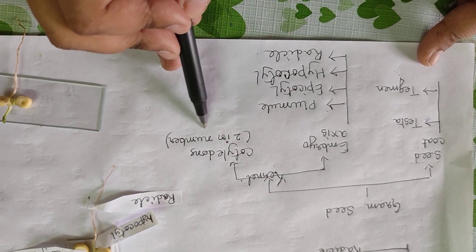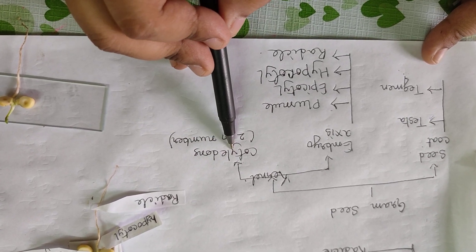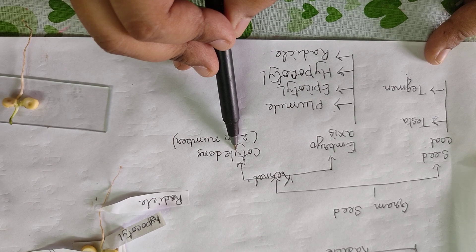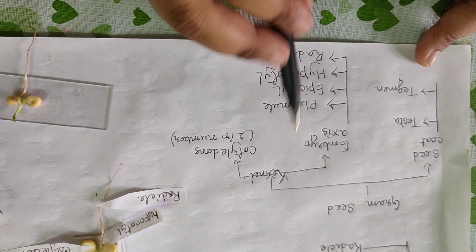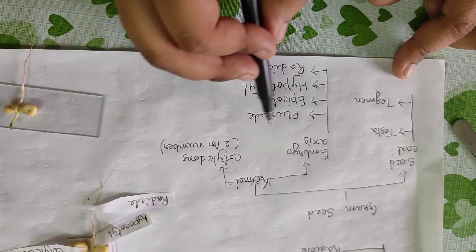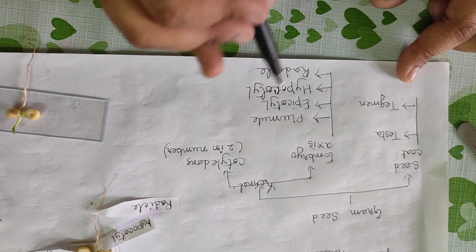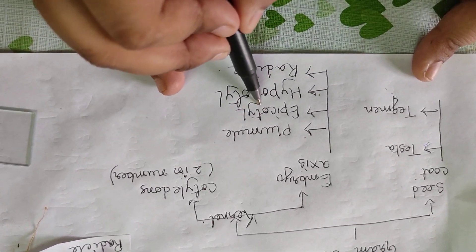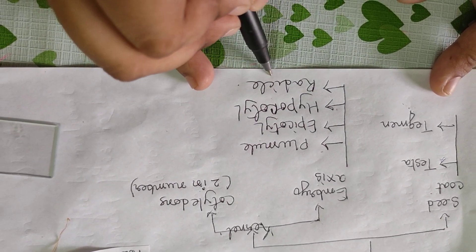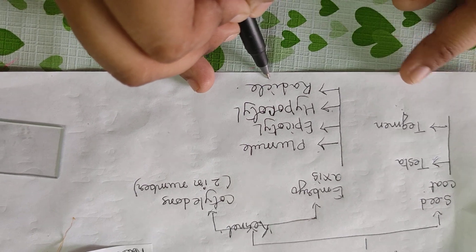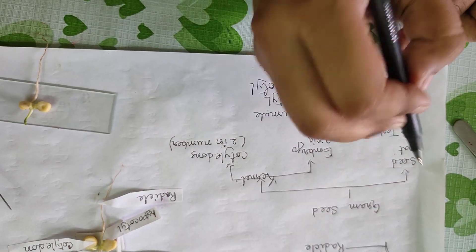The cotyledons here are two in number, that's why this is a dicotyledonous seed. The embryo axis is again divided into the following parts: plumule, epicotyl, hypocotyl, and radicle. First I tell you about the seed coat.